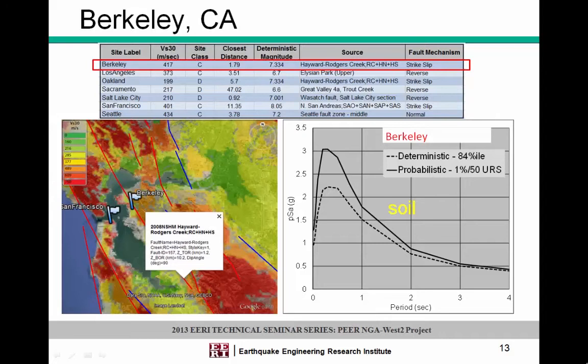Starting in Berkeley — the coordinates from Wikipedia, right at City Hall — which is less than two kilometers from the Hayward Fault. On the right I compare the deterministic mean plus one standard deviation and the probabilistic spectrum to see which controls the design spectrum. For this Berkeley site, the deterministic spectrum actually controls, so there is real value in looking at this analysis. A de-aggregation shows it's pretty much all Hayward Fault, with different magnitude ranges contributing.